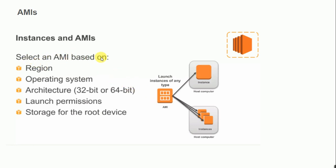You select an AMI based on the region. Each region consists of different AMIs, and each AMI has a unique number called the AMI ID, which is not repeated across different regions. For example, an AMI ID associated with a US region will not replicate in the Mumbai, UAE, or Bahrain region — never. You can use the same AMI with multiple instances. AMIs also have properties like OS architecture (32-bit or 64-bit), launch permissions, and storage root device types.